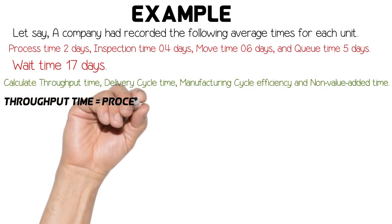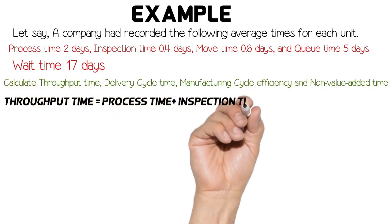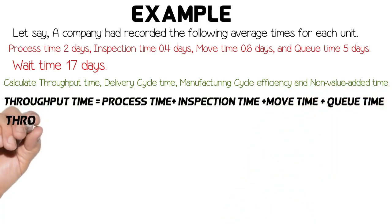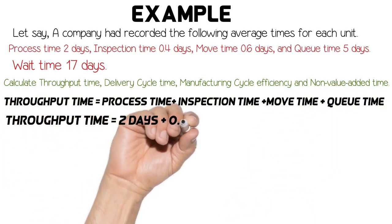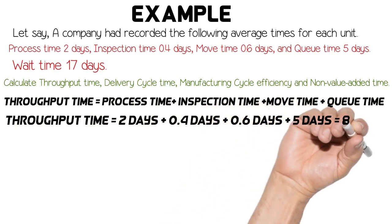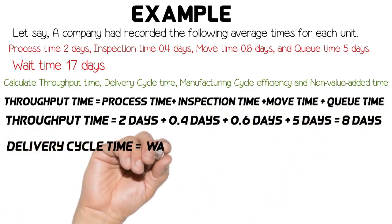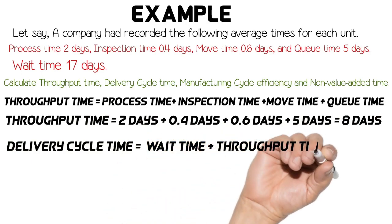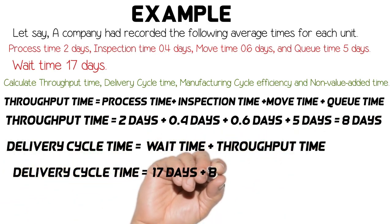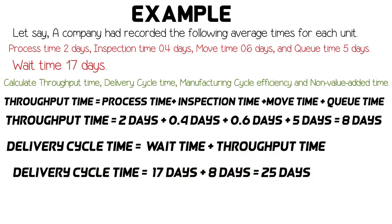First, we will calculate throughput time. Throughput time is equal to process time plus inspection time plus move time plus queue time. We add process time 2 days, inspection time 0.4 days, move time 0.6 days, and queue time 5 days, and get 8 days throughput time. Now we find delivery cycle time. Delivery cycle time equals wait time plus throughput time, so we add wait time 17 days with 8 days throughput time to get 25 days delivery cycle time.